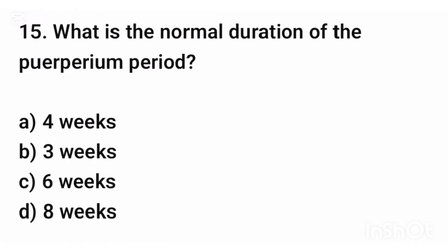Question number fifteen. What is the normal duration of the puerperium period? The correct answer is option C: Six weeks.